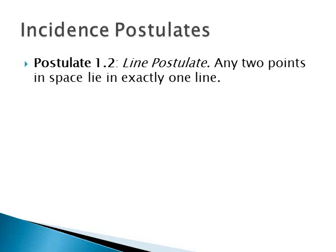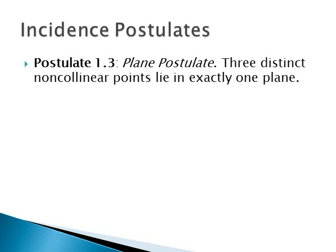Postulate 2 is just about lines and kind of breaks down the first one: any two points in space lie on exactly one line, so no matter where in space you place two points, you can connect them with a line. Similarly, Postulate 3 states that three distinct non-collinear points lie in exactly one plane — if you have three random points in space, one plane can go through them all.